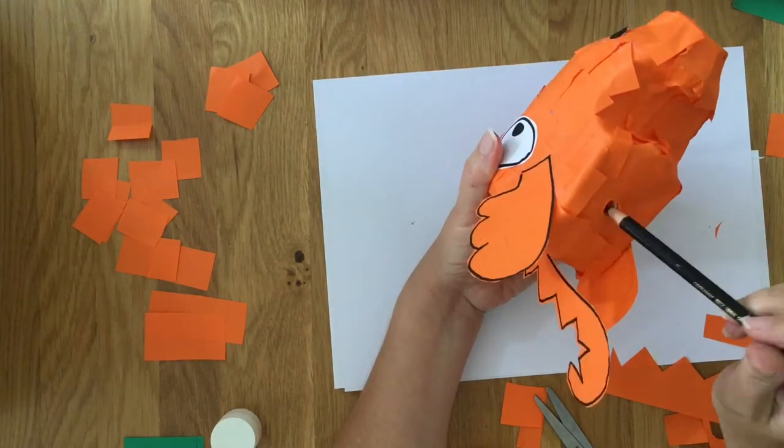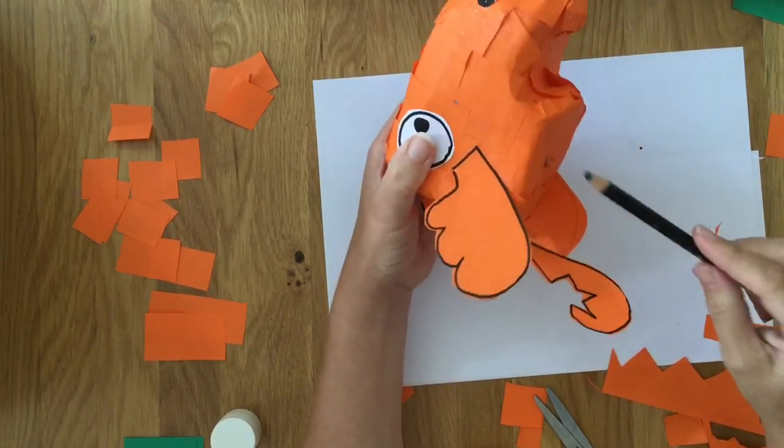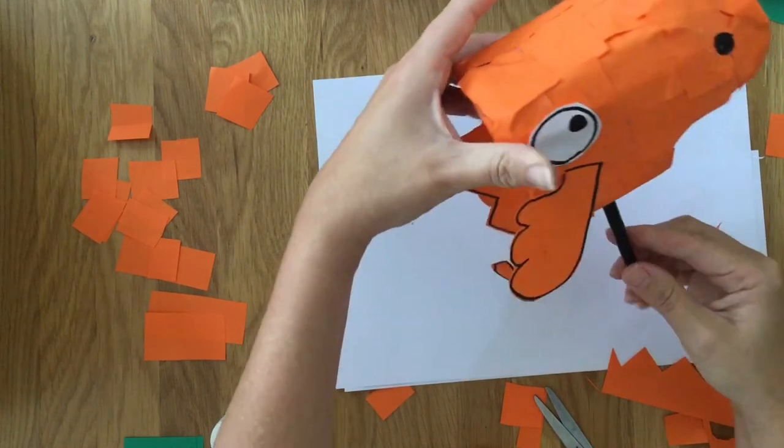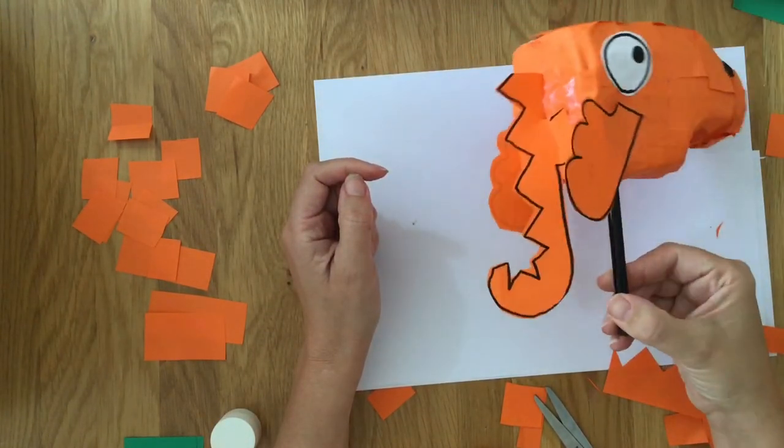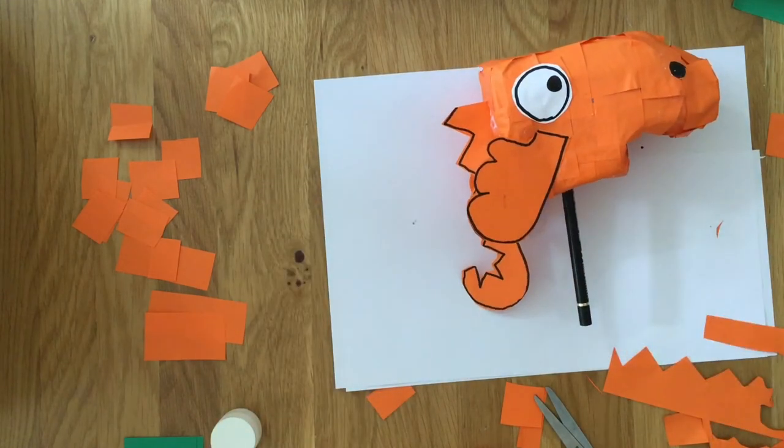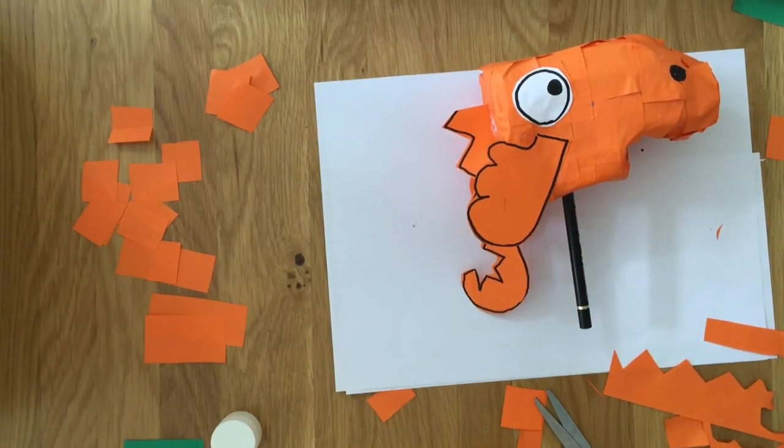And the last thing we need to do is just get an adult to make a hole in the bottom of the carton so we can push our pencil through. And that's Fergal all done! So I hope you enjoyed it and we'll see you again soon. Bye-bye!